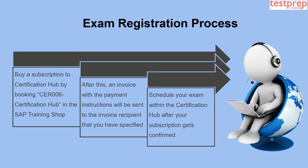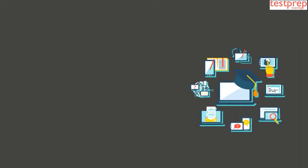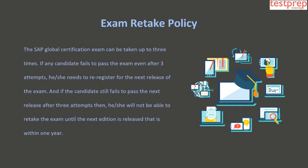To register for the exam, follow these steps: First, buy a subscription to the Certification Hub by booking CER006 in the SAP Training Shop. Second, an invoice with payment instructions will be sent to the invoice recipient you specified. Third, schedule your exam within the Certification Hub after your subscription is confirmed.